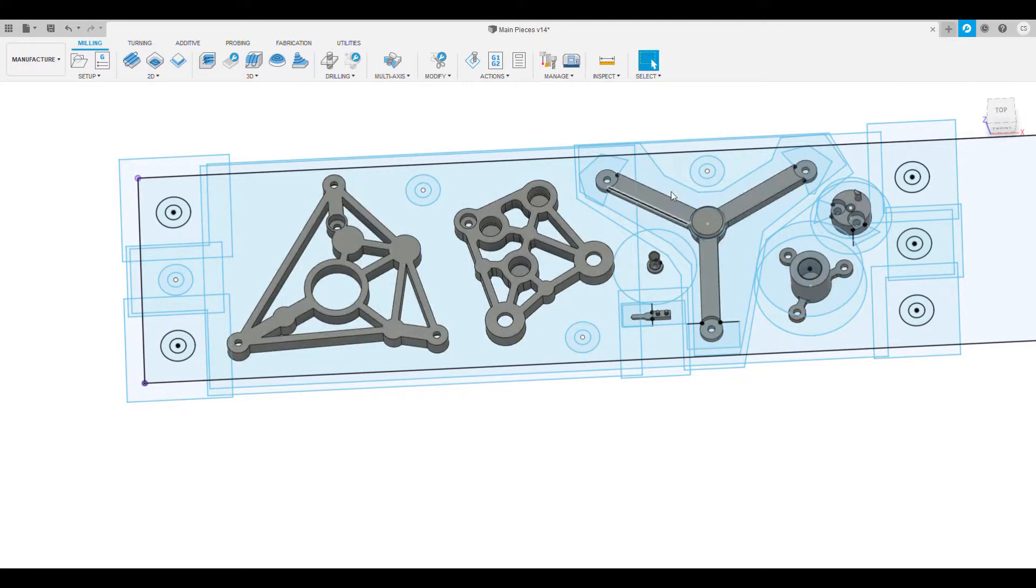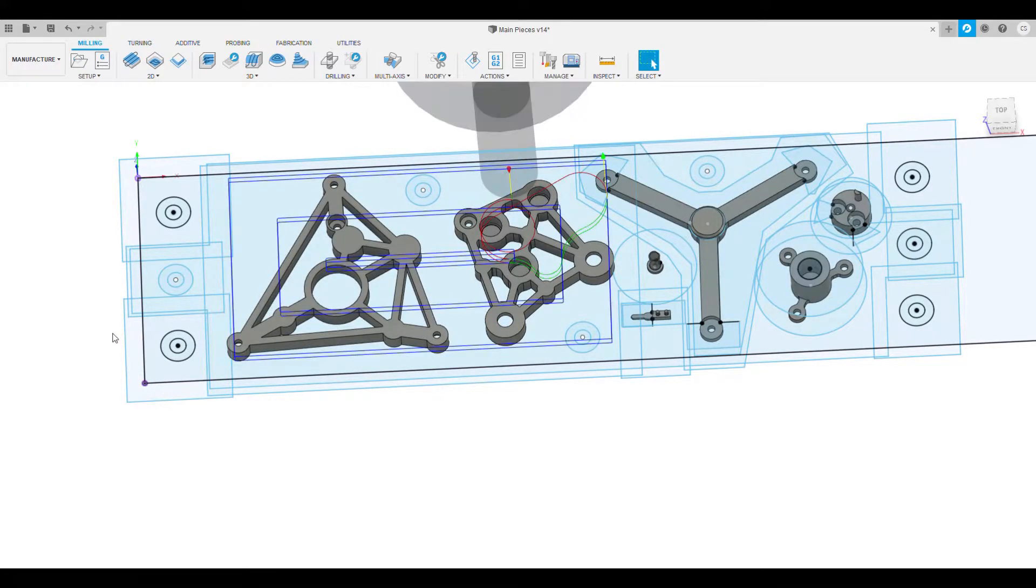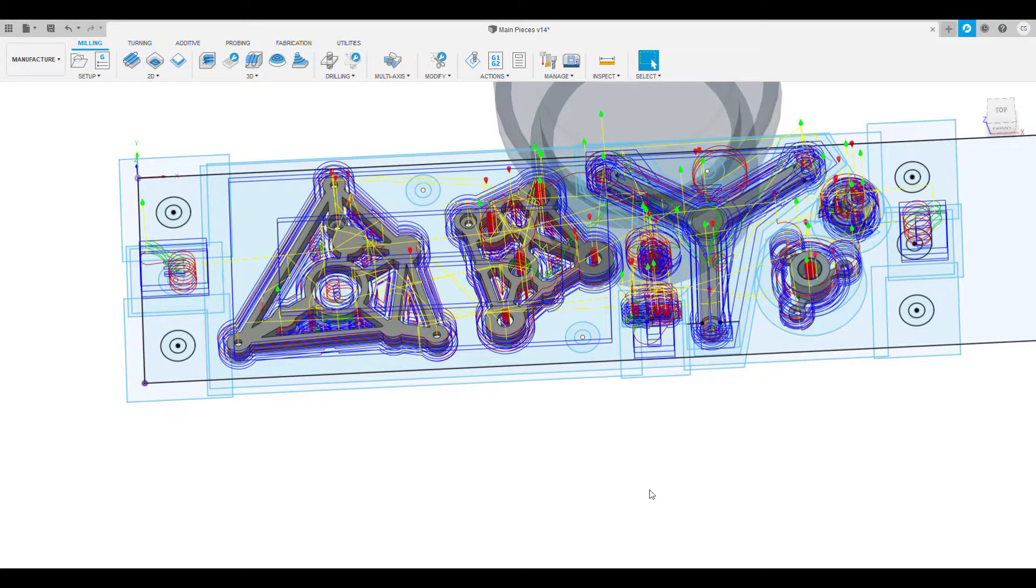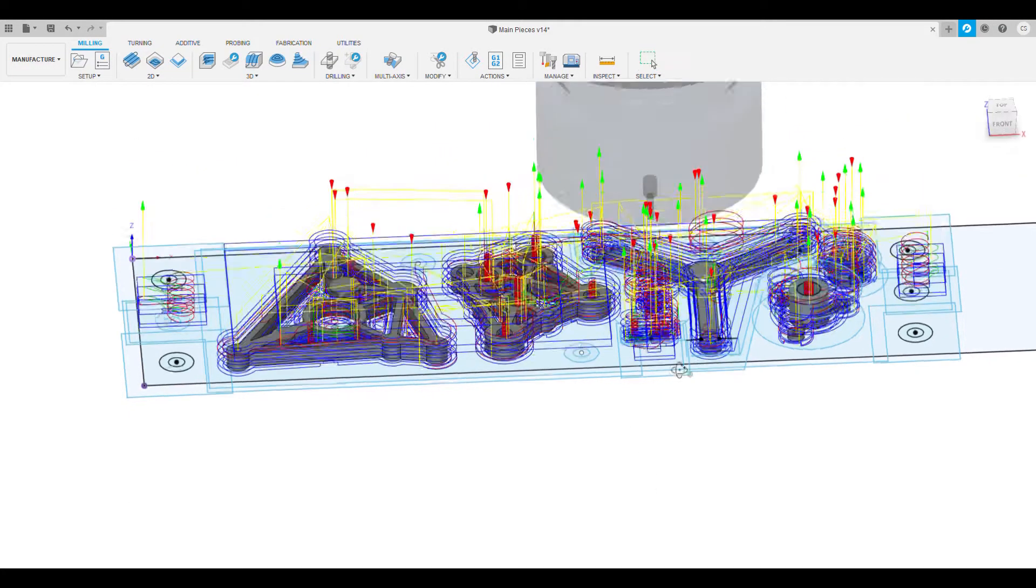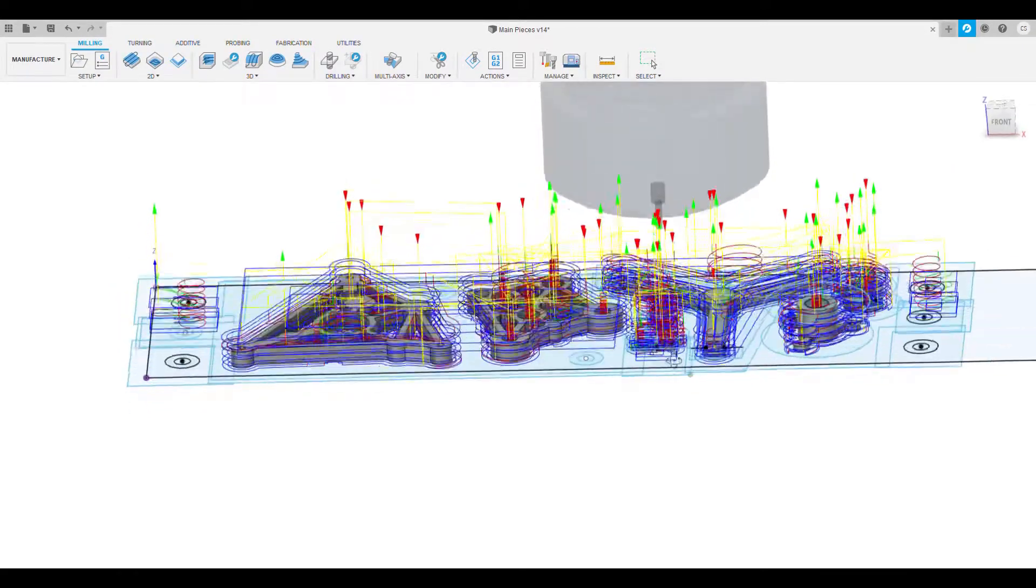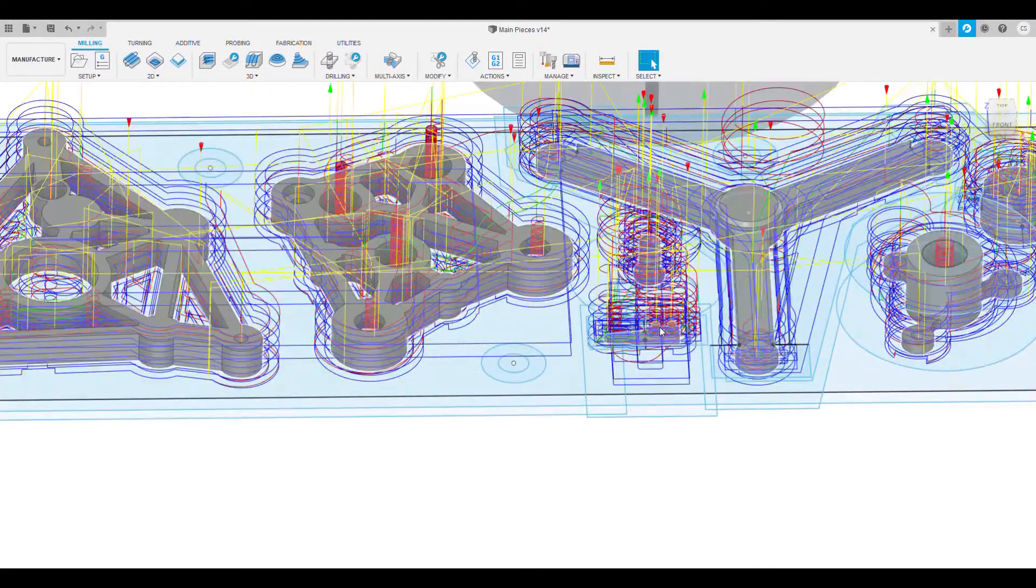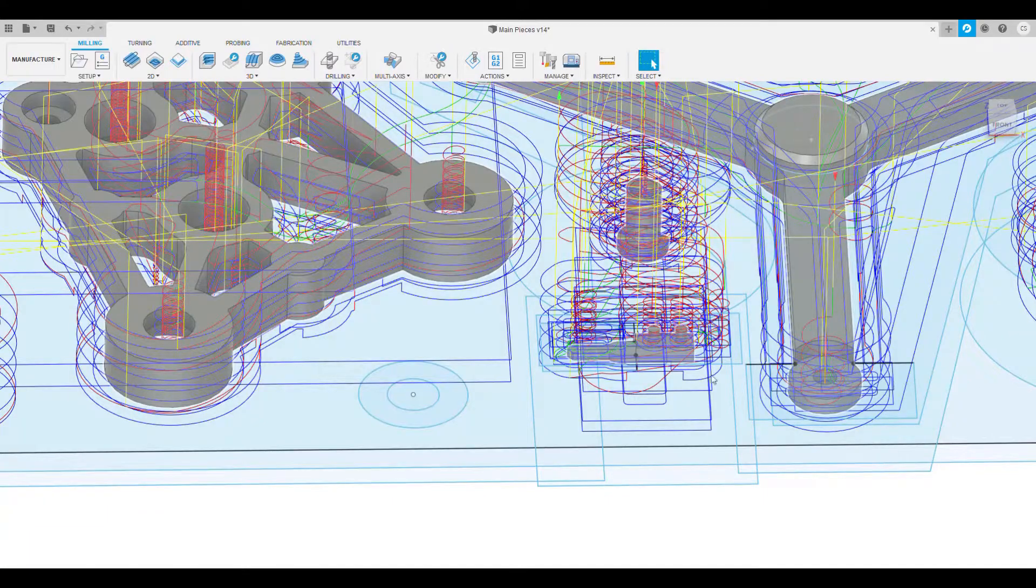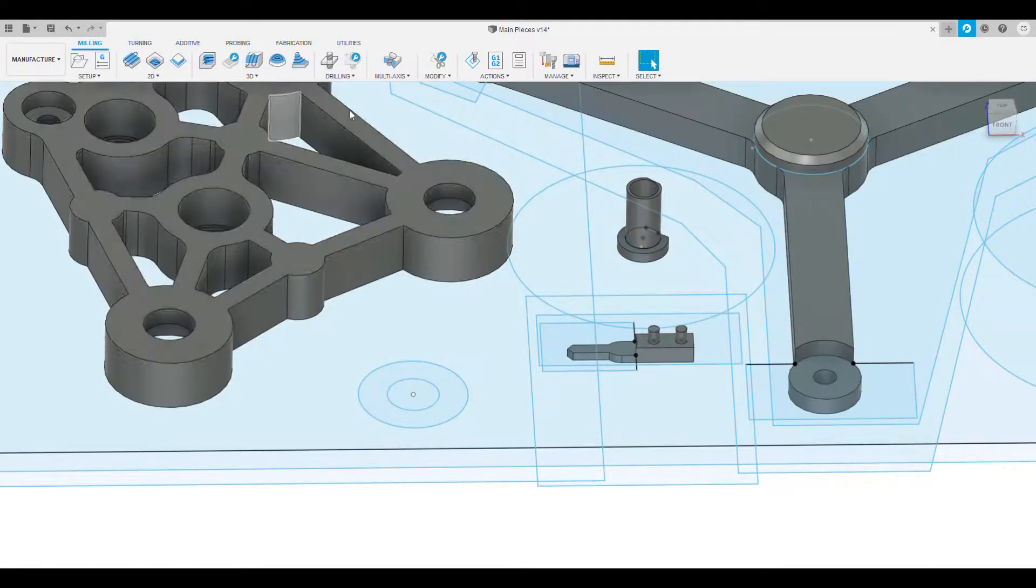Now we're going to flip the workpiece over and we're going to machine the front side. Here I'm highlighting all the toolpaths for you so you can see how complicated it is. We're using a lot of different end mills everything from a half inch end mill all the way down to 1/32nd inch end mill.